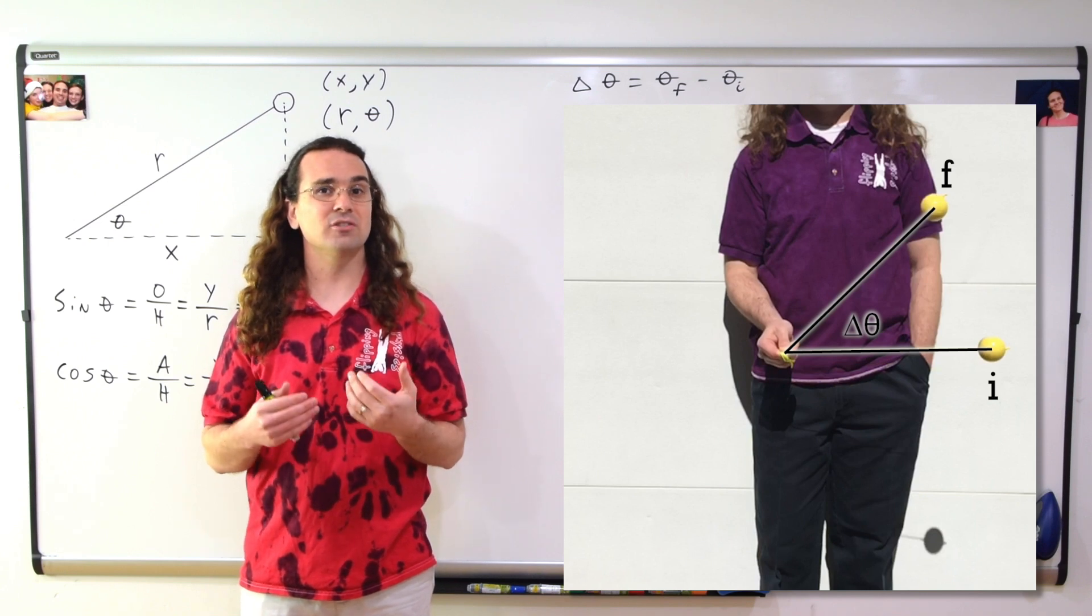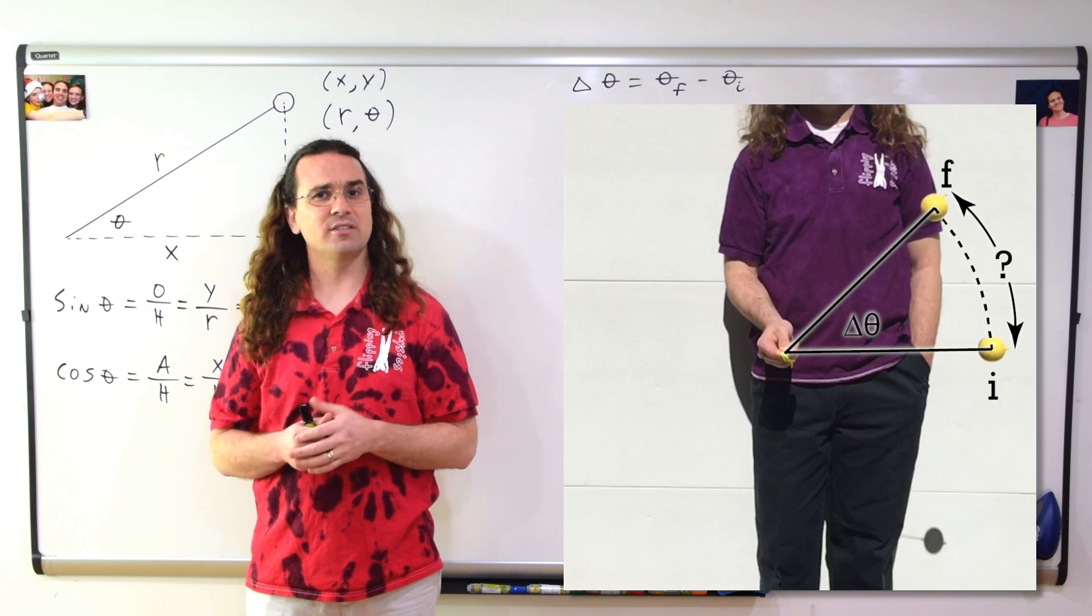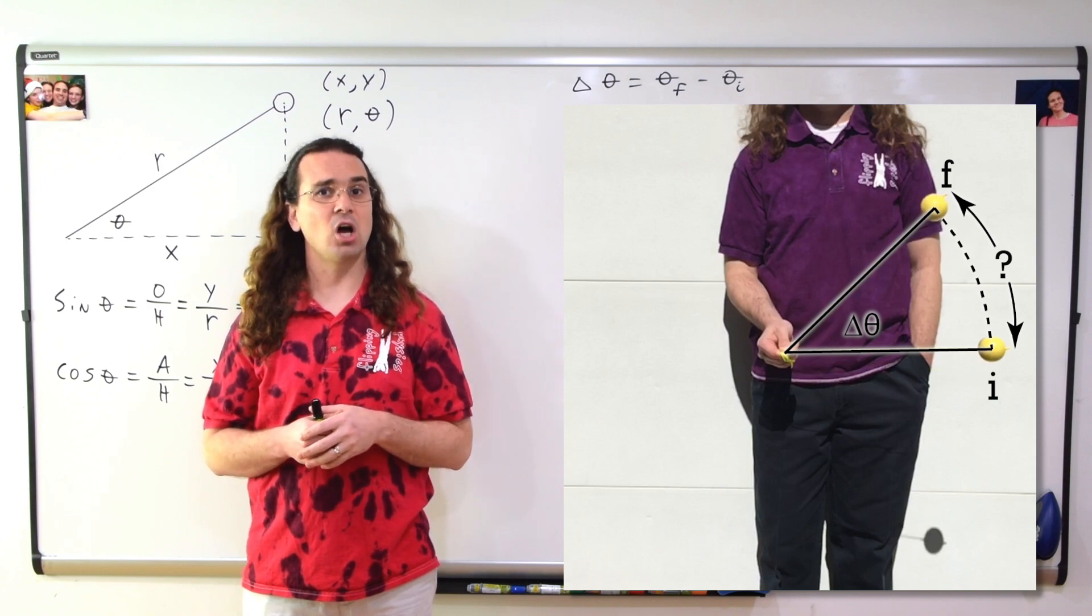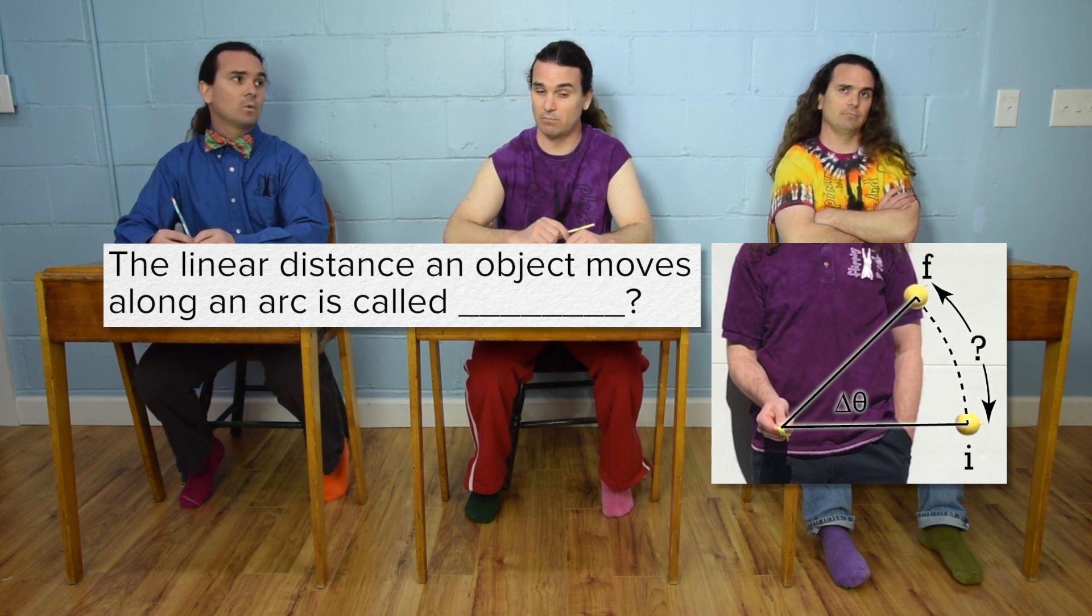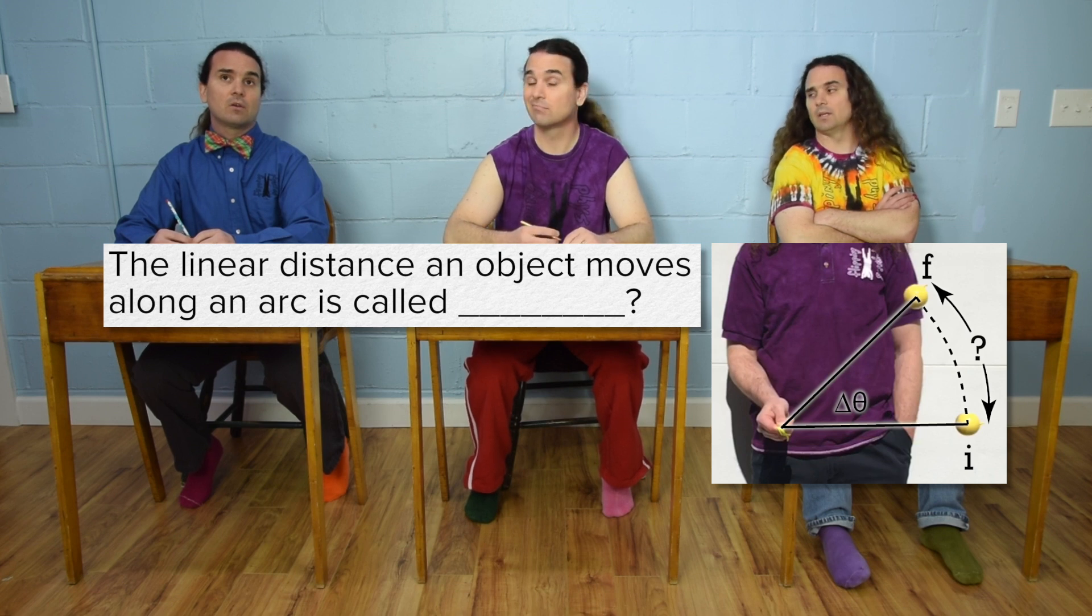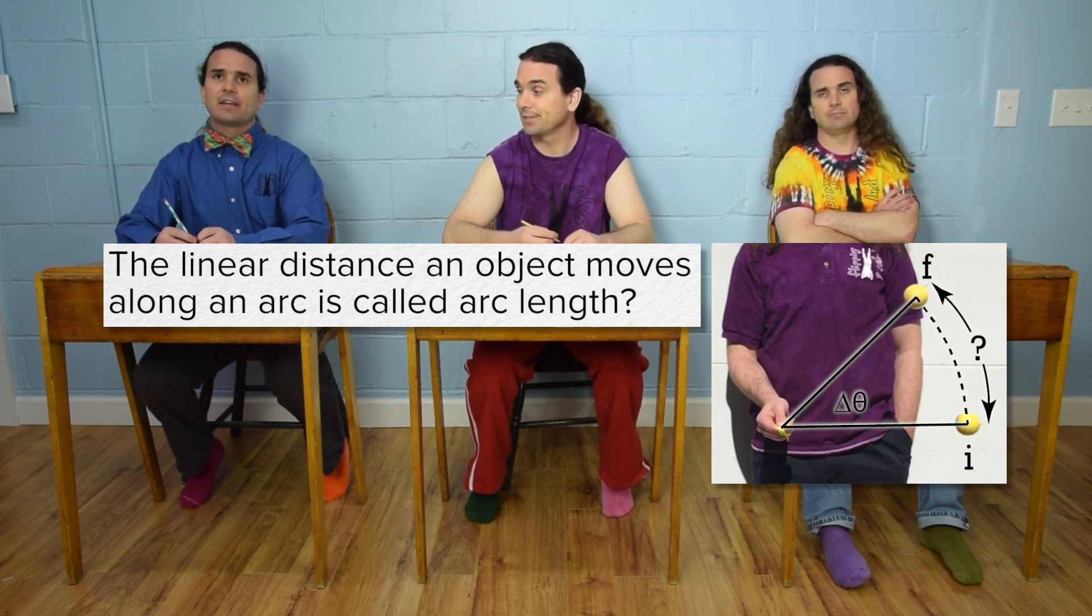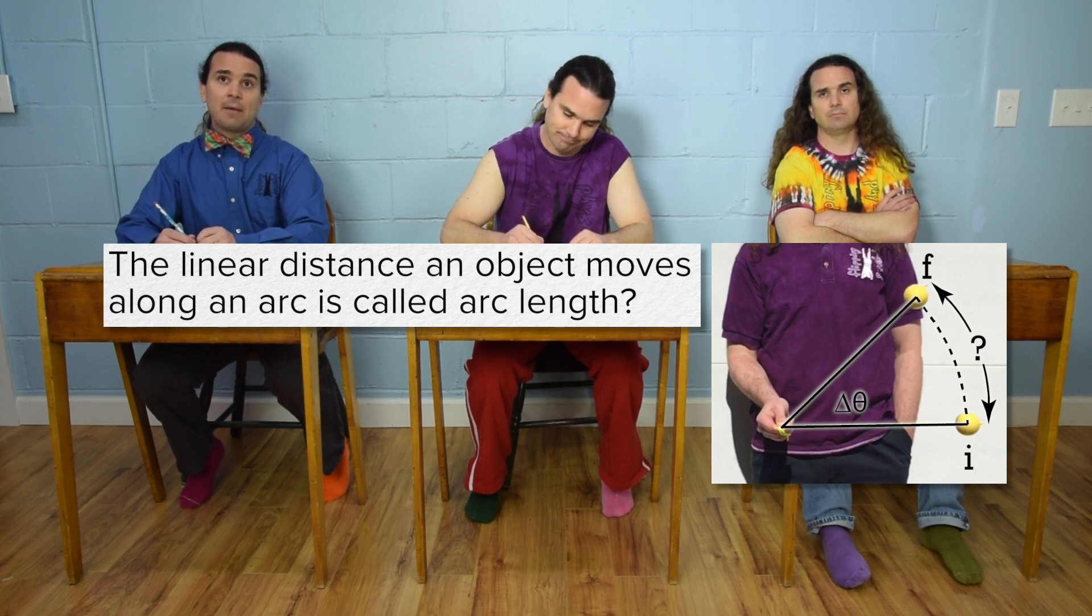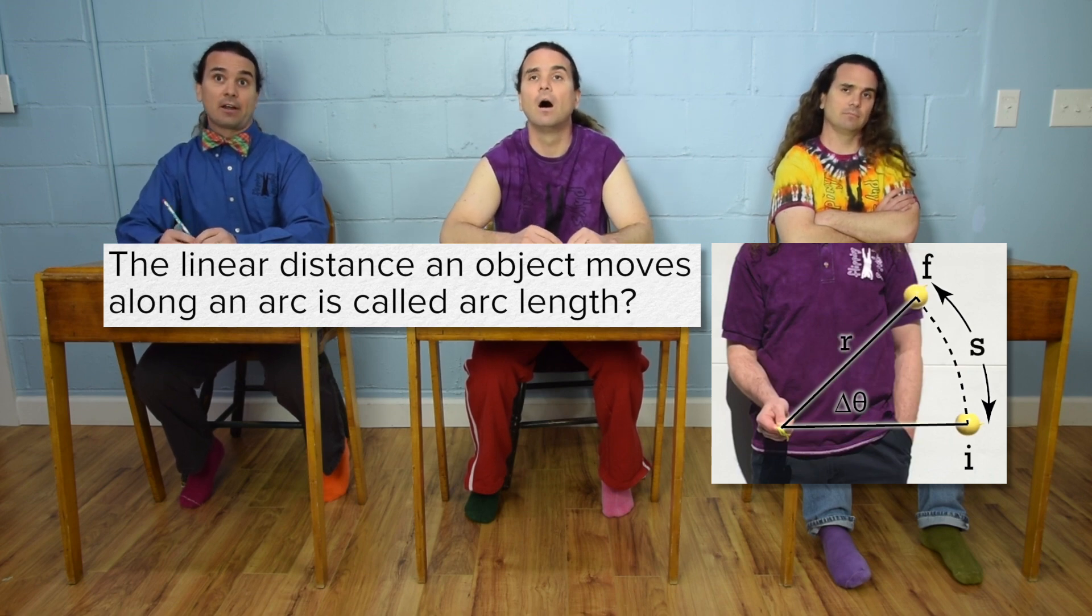Billy, what is the linear distance traveled by an object moving along an arc called? It's arc length. The linear distance an object travels through when moving along an arc. And lowercase s is the symbol for arc length.